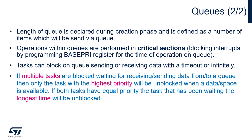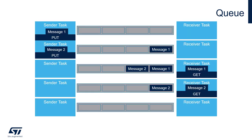Tasks can be blocked on queue operations — on sending or receiving data — with a given timeout or infinitely. If multiple tasks are blocked waiting to receive or send data, the task with the highest priority will be unblocked when data becomes available. If all tasks have the same priority, the task that has been waiting the longest will be unblocked.